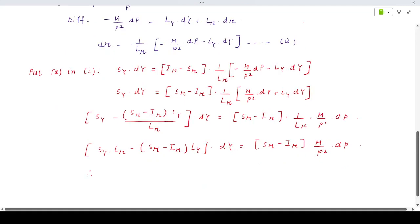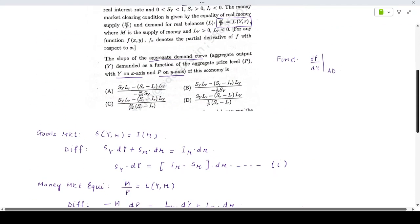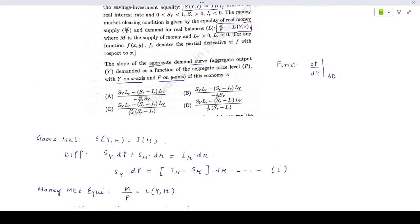Therefore, dP/dY would be [Sy Lr minus (Sr minus Ir) Ly] divided by [(Sr minus Ir) M/P squared]. If you check the options, this is basically option C in your set.